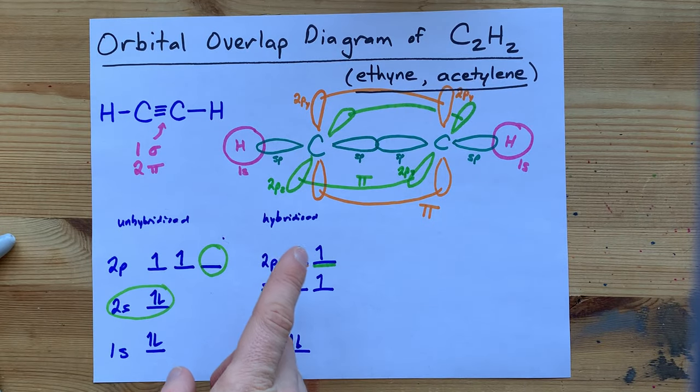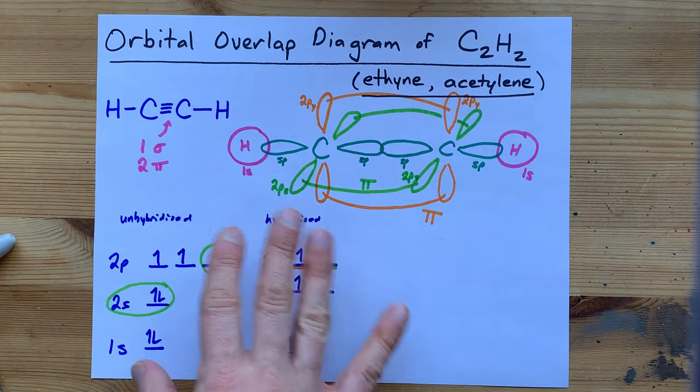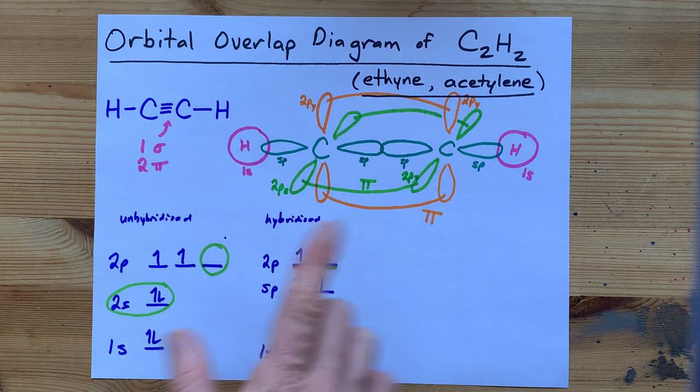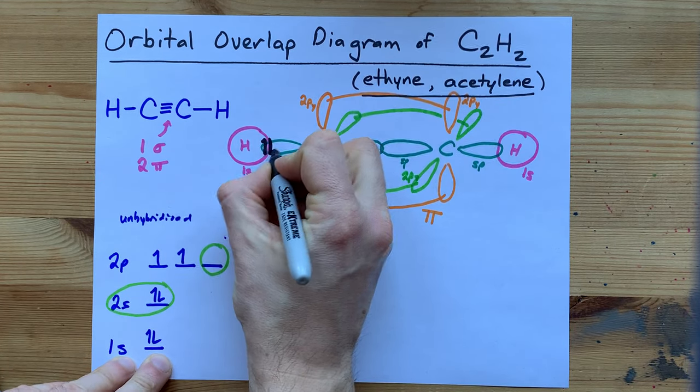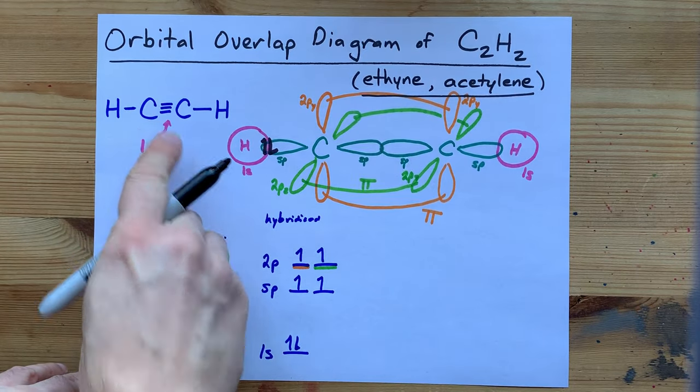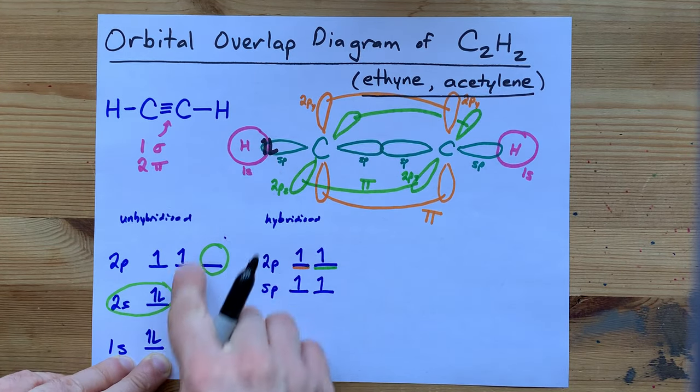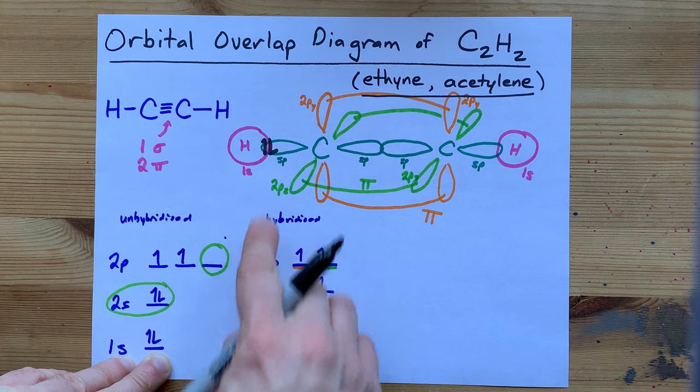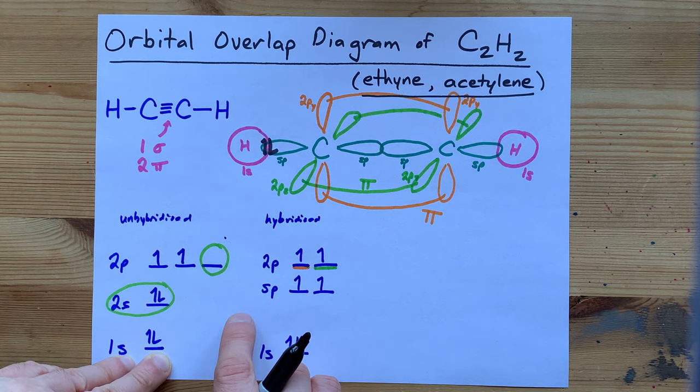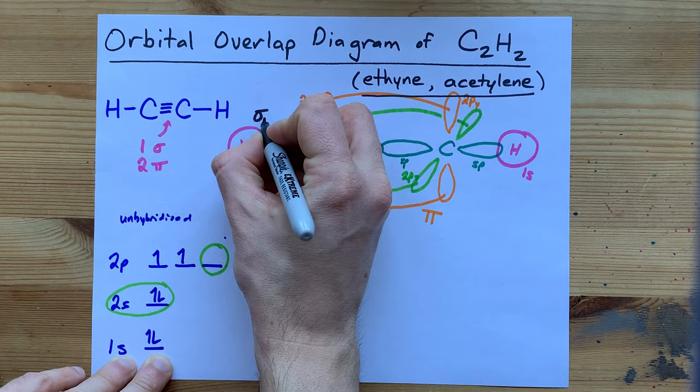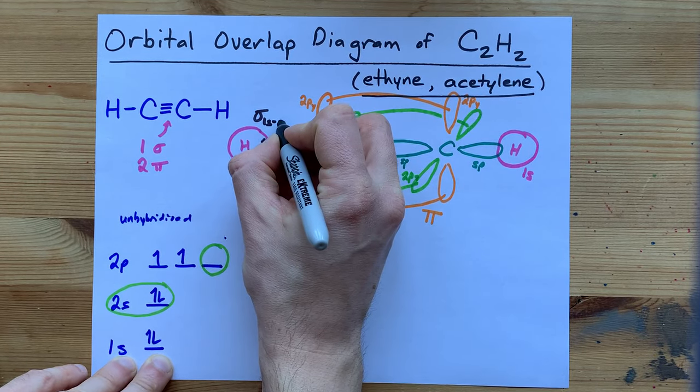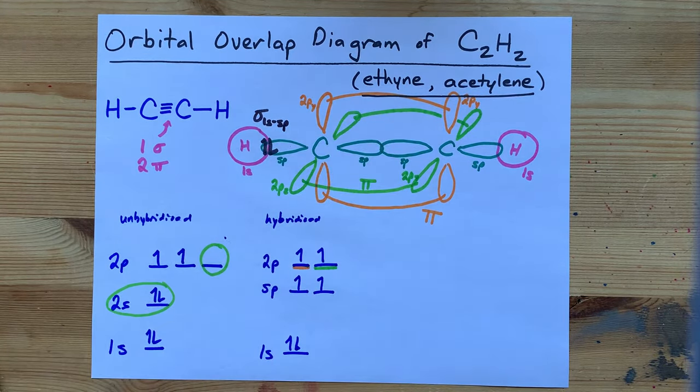This is the orbital overlap diagram. Some teachers might want you to show the actual bonds. For example, there are two electrons in the single bond between carbon and hydrogen. There's me drawing them the same way I would draw them in an electron configuration diagram. And I can label that as a sigma bond between the 1s of hydrogen and the sp of carbon.